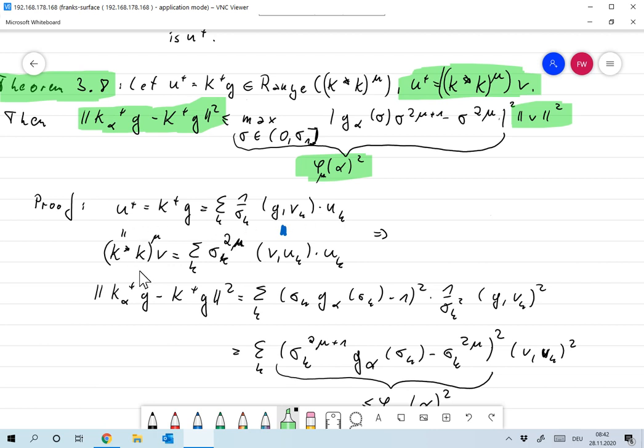if U+ is in the range of K* K to the order of μ, then it can be written as K* K to the order of μ times V. Now we already know what K* K does. It multiplies in the singular system by σ_K squared, so this is nothing but the sum over all K, σ_K to the 2μ ⟨V, U_K⟩ times U_K. Now, comparing the coefficients here, we see that this over here must be the same as this one.